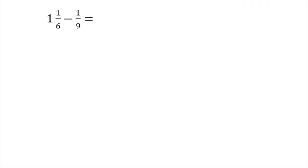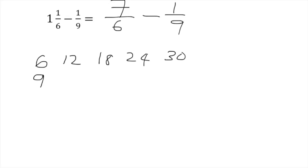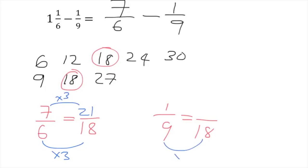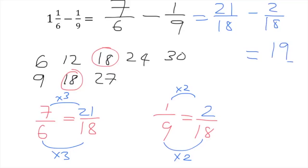Now: 1 and 1/6 minus 1/9. Turn the mixed number into an improper fraction: 1 times 6 is 6 plus 1 gives 7, so 7 sixths minus 1 ninth. To find the common denominator, list multiples of 6 (6, 12, 18, 24, 30) and 9 (9, 18) — the lowest common multiple is 18. Rewrite 7 sixths as 21 eighteenths (multiply by 3) and 1 ninth as 2 eighteenths (multiply by 2). So 21 over 18 minus 2 over 18 equals 19 over 18.